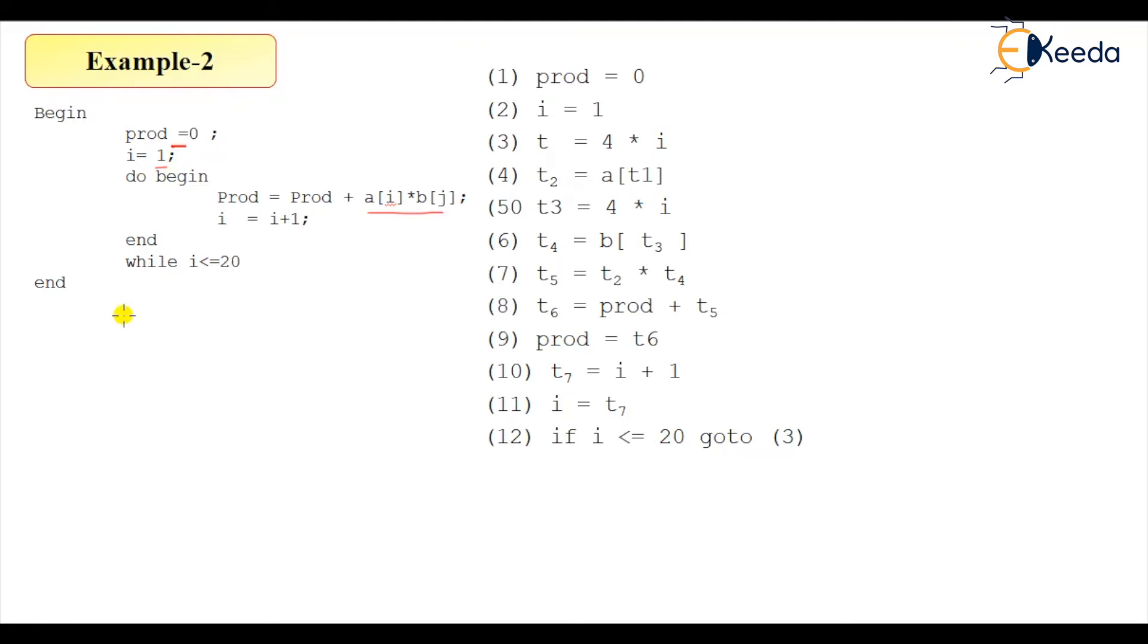So now a few things, let me tell you that a[i] and b[j] - a and b are 1D arrays. That is, I think, clear to you - 1D arrays.